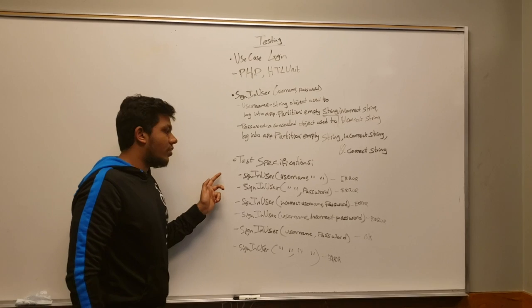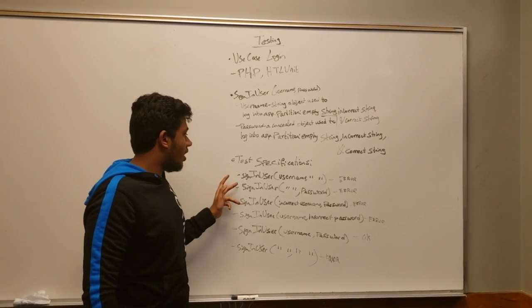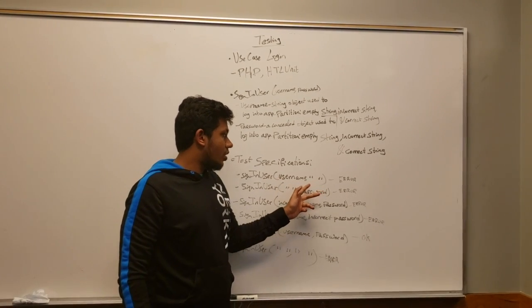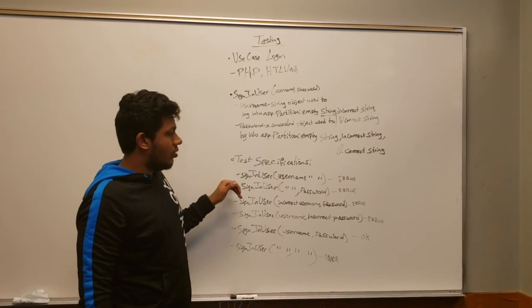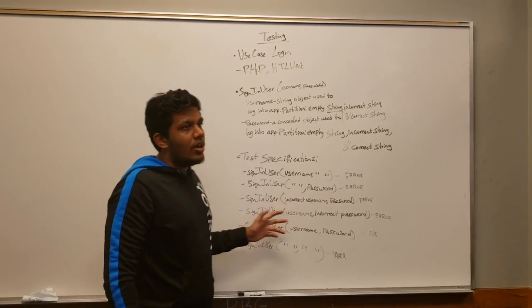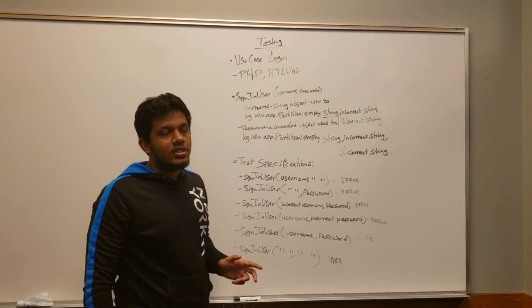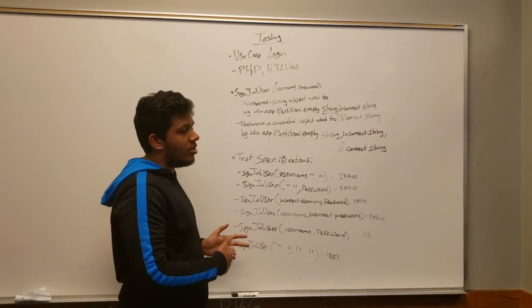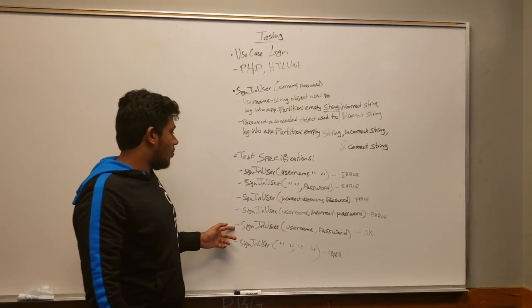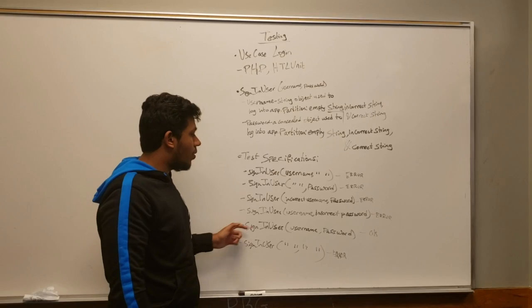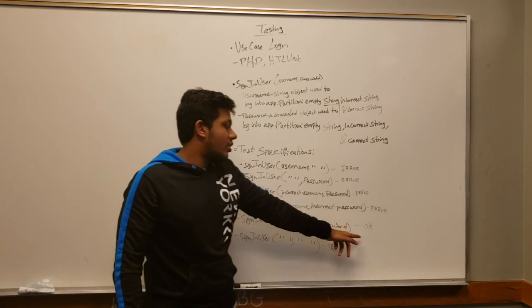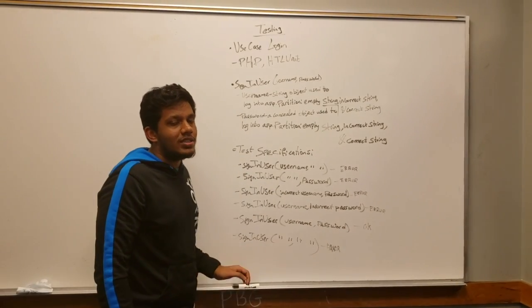The specifications for this test is sign in user with a correct username or an empty string. Any empty strings will result in an error. An incorrect field will also result in an error because our database will automatically check against its own copies and authenticate. If it's correct, then it will let the user in. It's an AND relationship. If both fields are correct and both fields are not null, then it will let you log in and grant full access into the application.